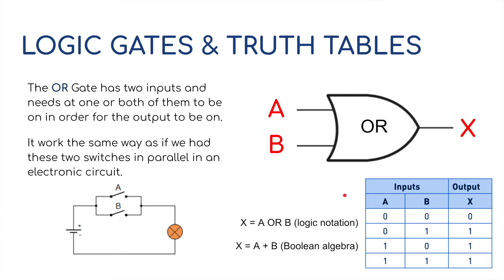The next gate is the OR gate. The OR gate has two inputs, A and B. But the OR gate works in a different way. One or both of them, one or both A and B, need to be turned on. For example, zero and one need to be turned on in order for the output to be turned on. Also, with the OR gate, if both of them are turned on, one and A and B are both turned on, then the output will be on as well.